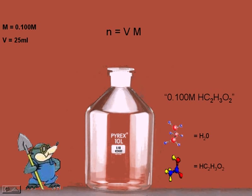This equation says that the number of moles of solute present in solution, n, is equal to the volume in liters, V, times the moles of solute per liter, M.